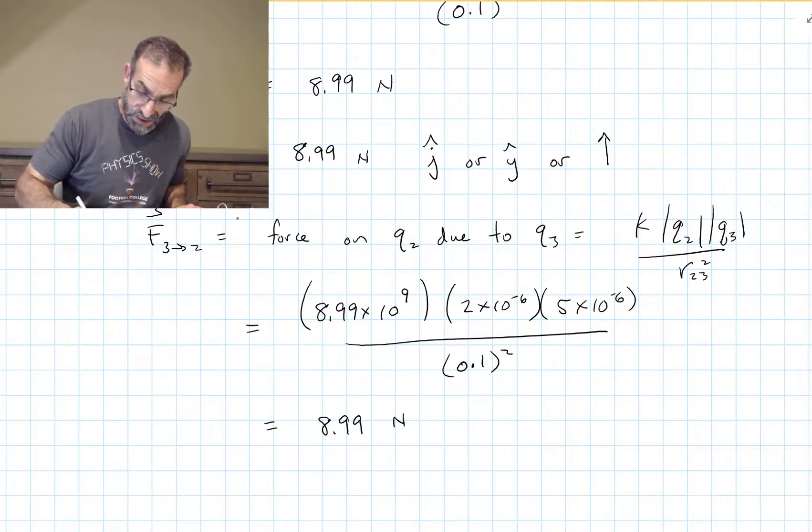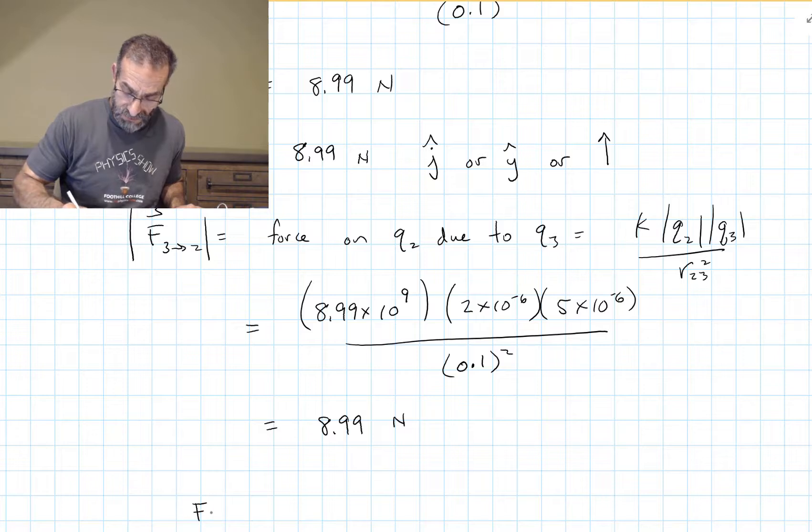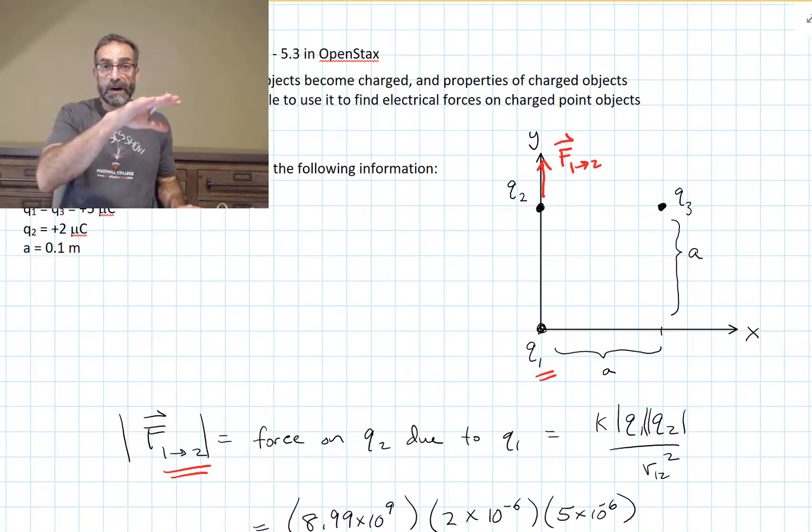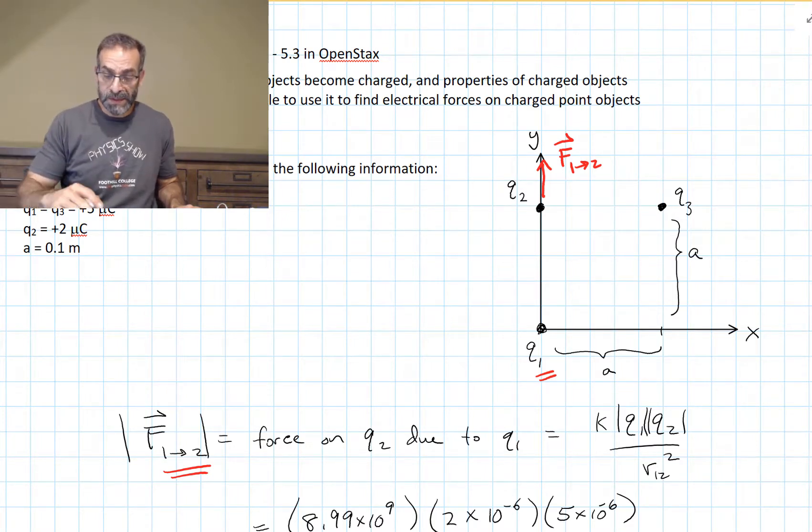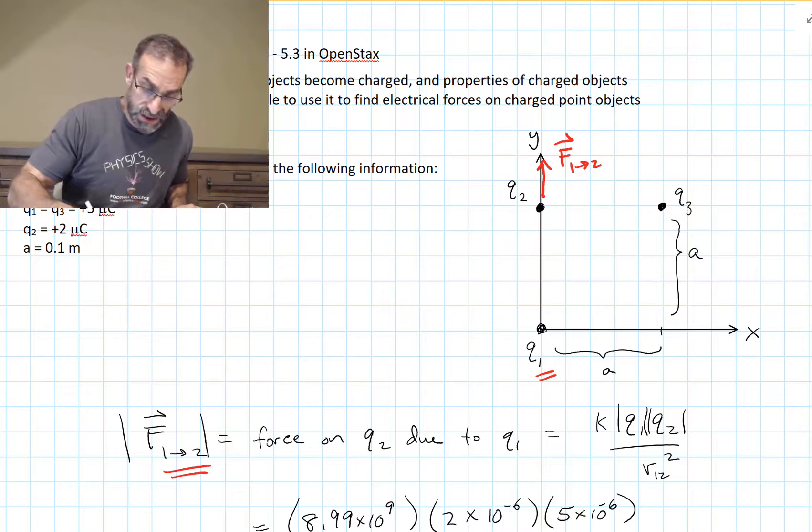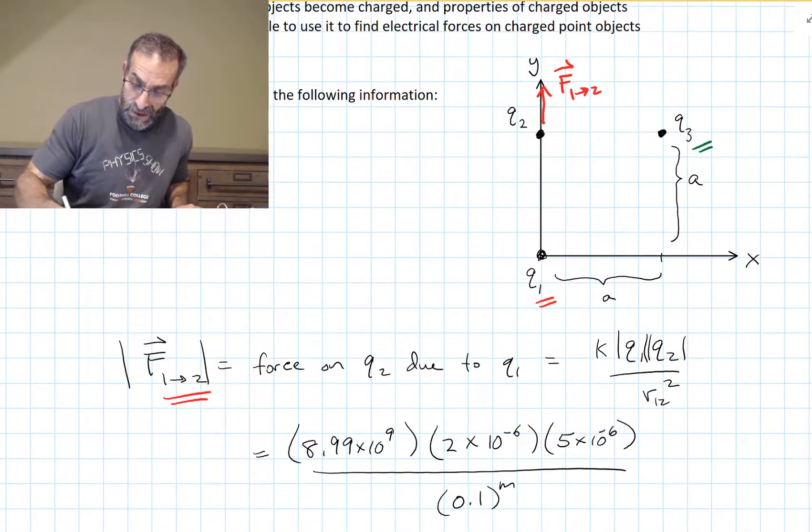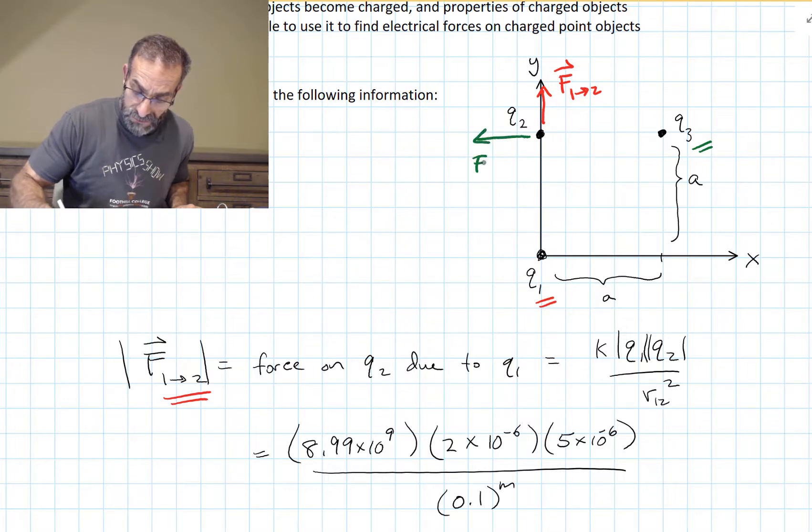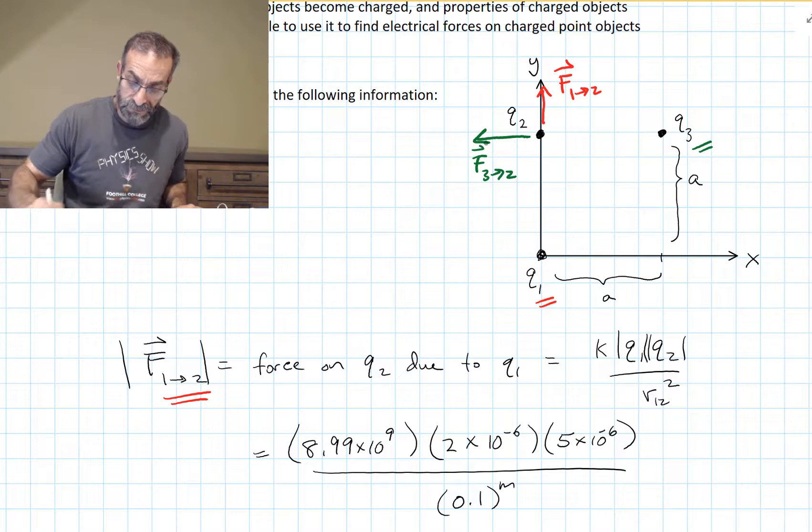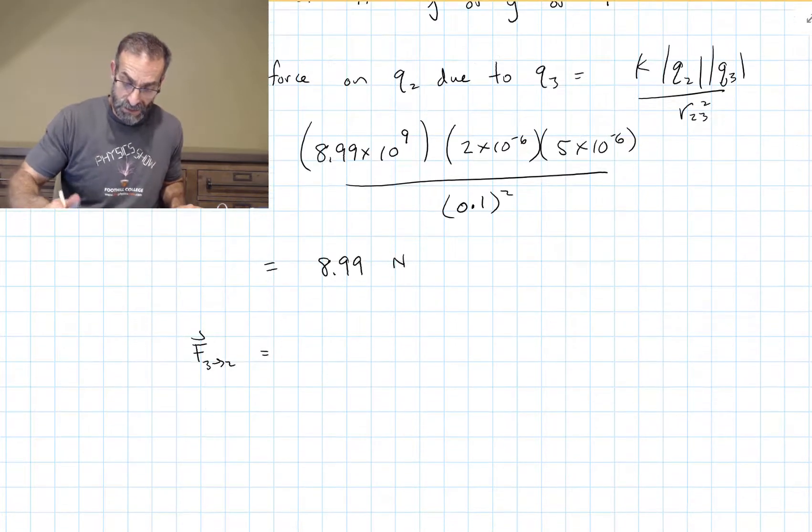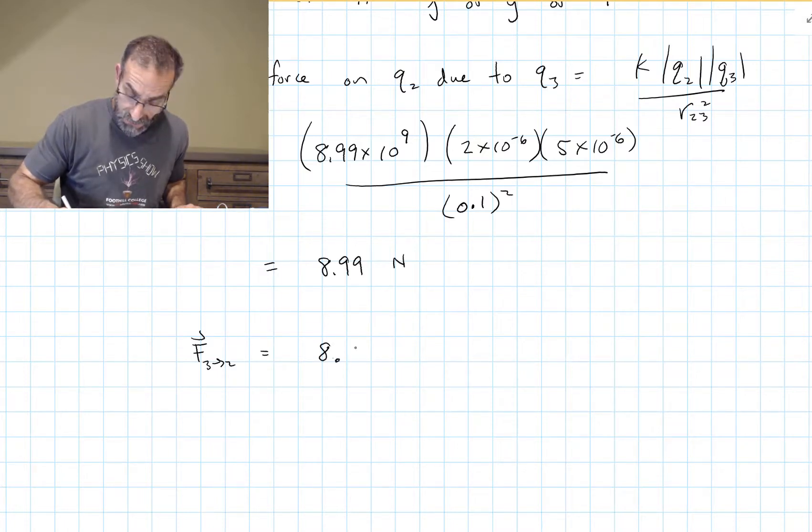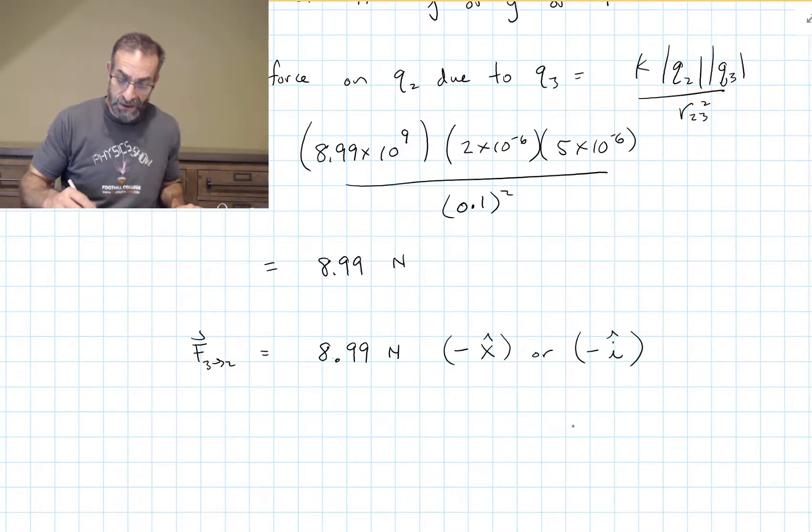Now let's find the direction. This is the magnitude. Q2 and Q3 are lined up horizontally with one another. The force will be either toward or away from Q3. And because they're both the same charges, they repel each other. Let's use green for this charge. And the charge will be pointing in that direction. So that would be 8.99 newtons in the negative x-hat direction, or negative i-hat. It's to the left.